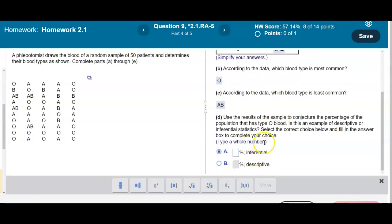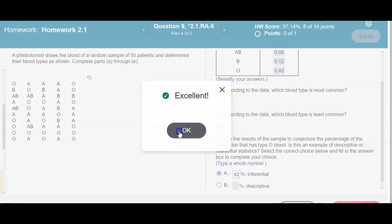So in this case here, when we're dealing with a percent here, it's going to be inferential. And what is the percentage for the blood type O? Well it's 42%. So let's check our answer. And there is our result.